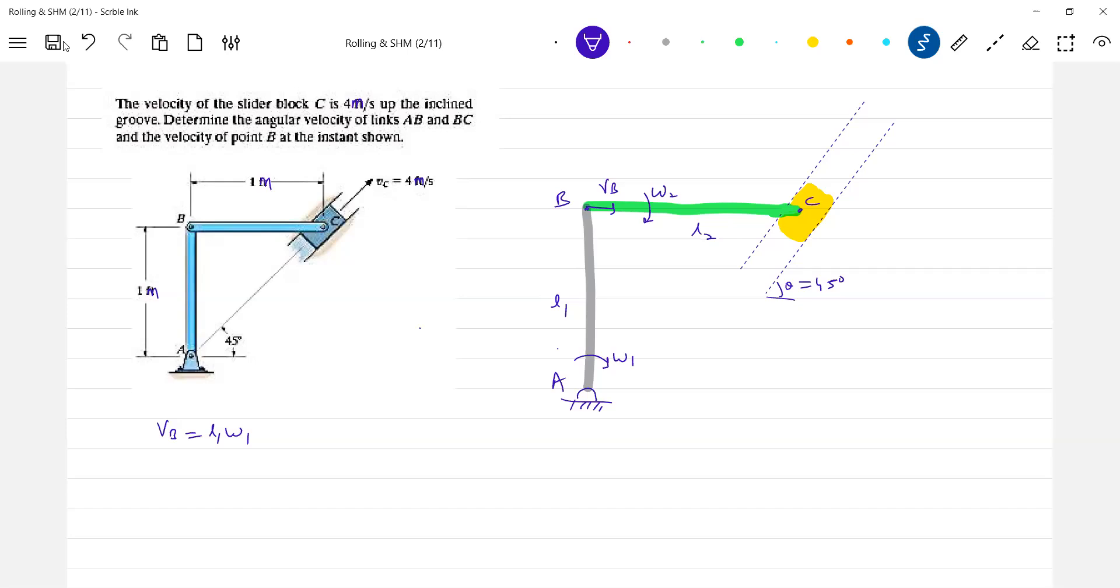What about the velocity of point C, velocity of point C? So only for constant equation. So how to get the, we know Vc. So can we get Omega 2? So Vc theta, this is theta.